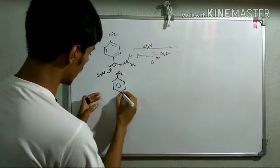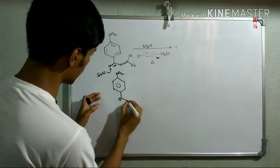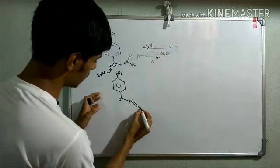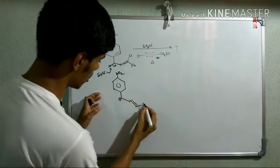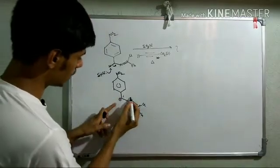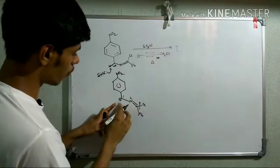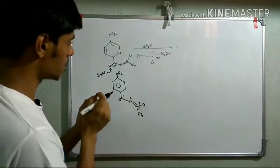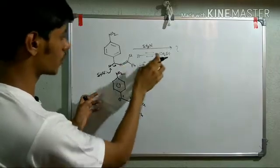So you will get this NO2 and here you will have this minus, and here you will have this N and here you will have this imine linkage. Now you can see this is a 1,3-dipolar species and it can react with this compound.